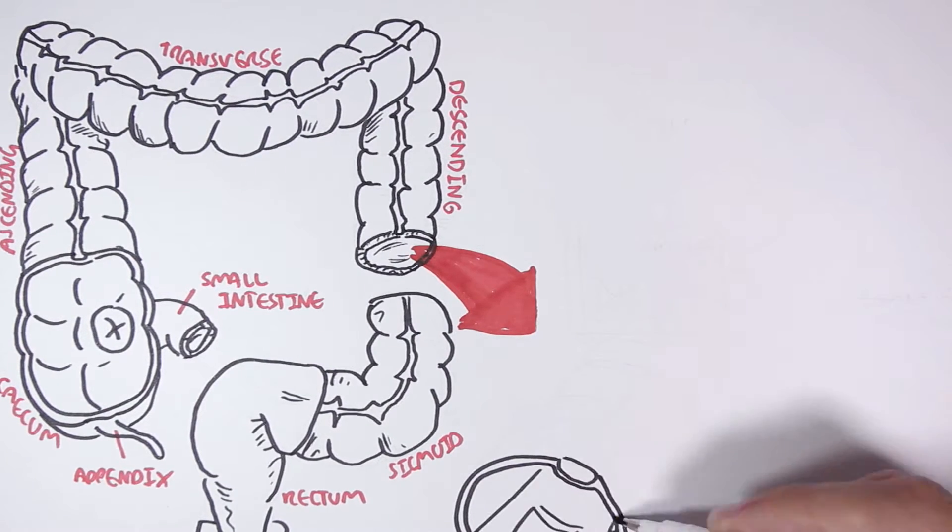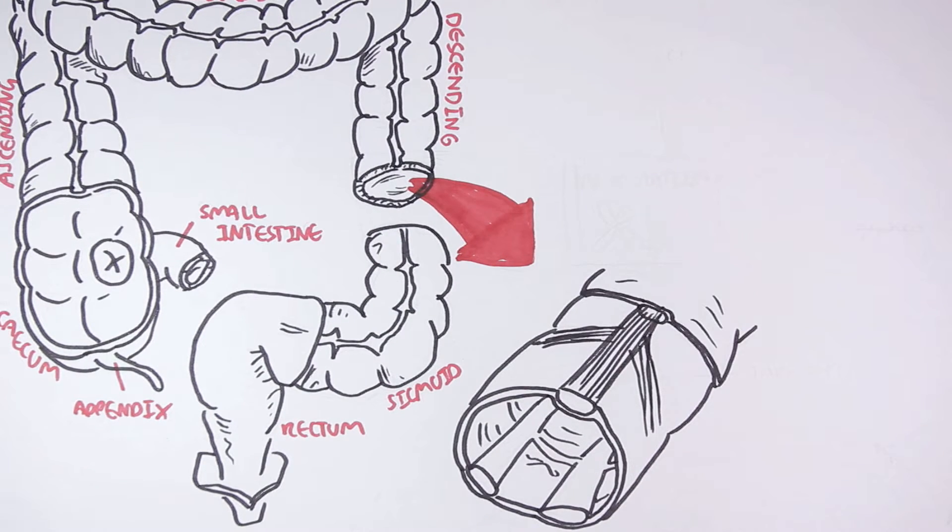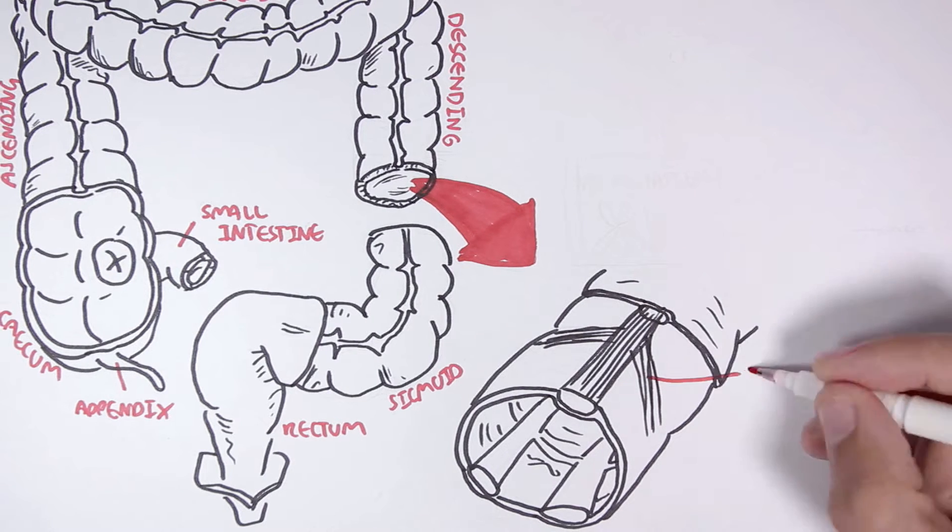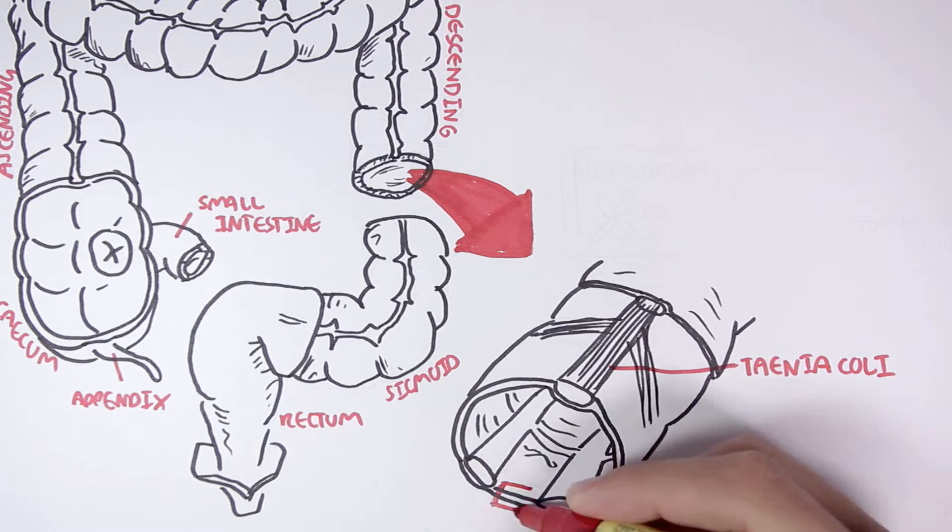Let's take a section of the colon. These three longitudinal fibers that run along the colon are called tinea coli. The tinea coli runs along all segments except the rectum.